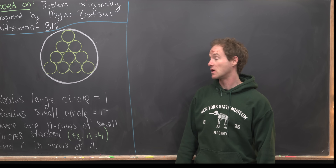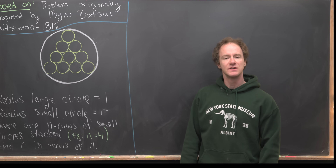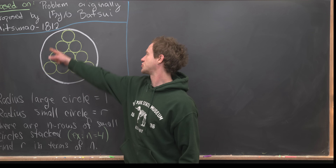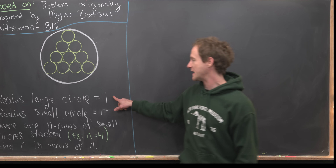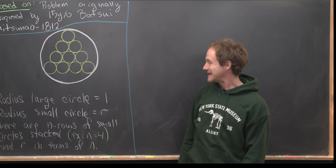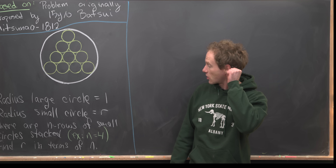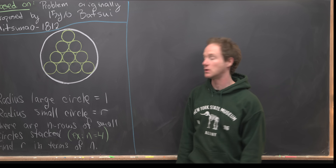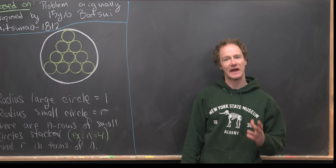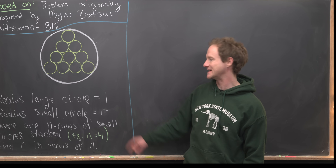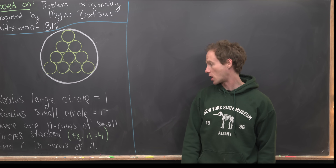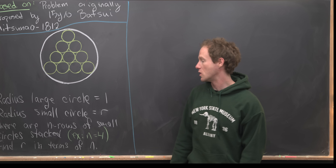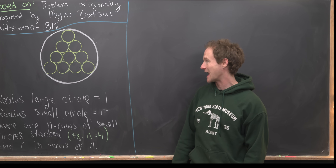Here's the setup. We've got a large circle with radius 1, and inside that large circle we've got a stack of small circles. Those small circles have radius little r.